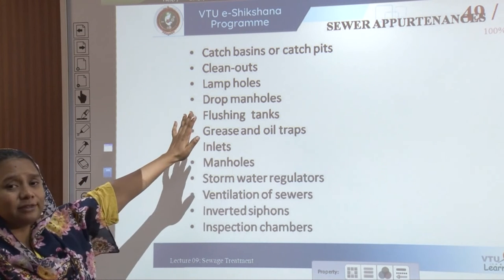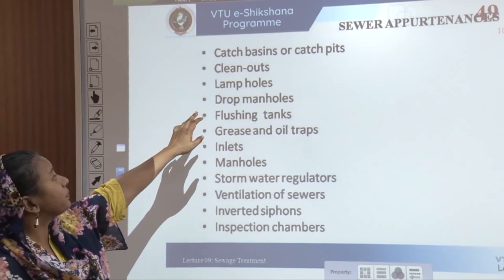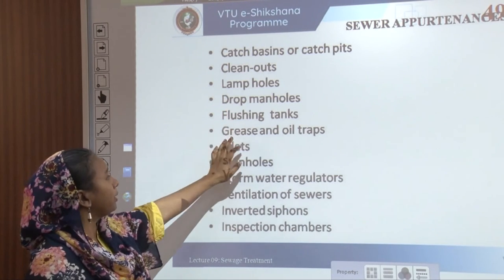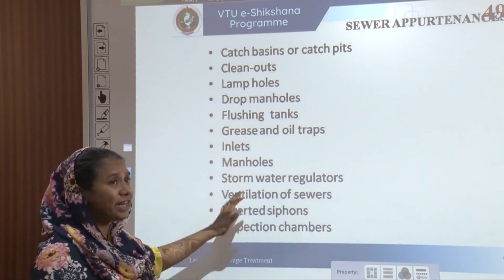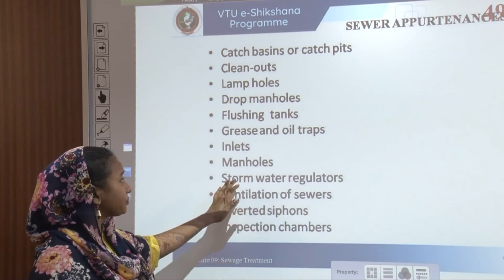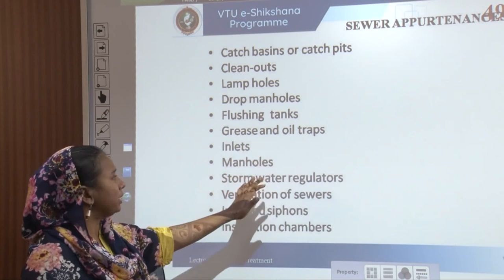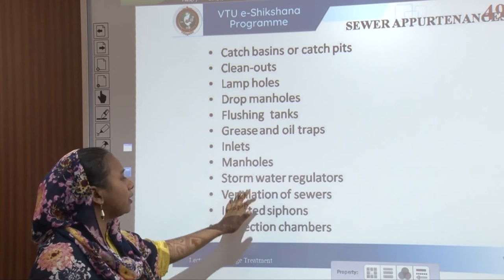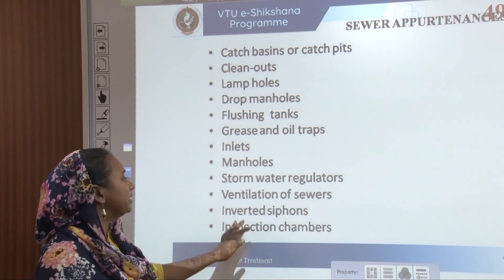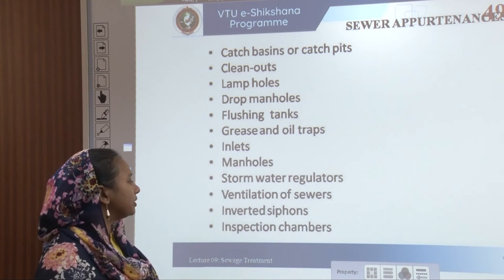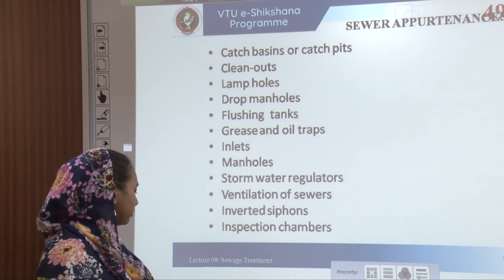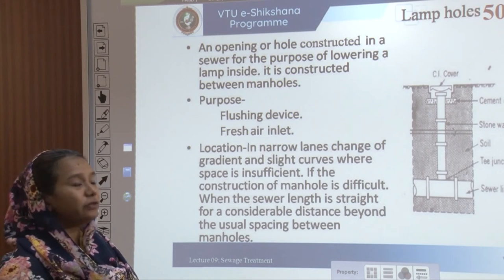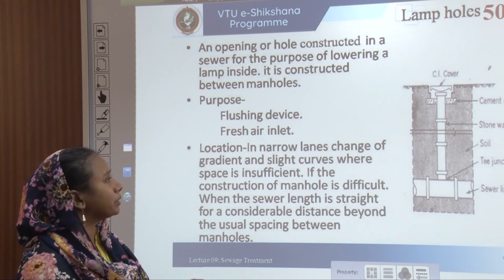The appurtenances required in a sewerage system include: catch basins, clean outs, lamp holes, drop manholes, flushing tanks, grease and oil traps, inlets, manholes, stormwater regulators, ventilation of sewers, inverted siphons, and inspection chambers. We are going to look into each of them briefly.